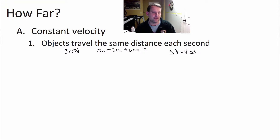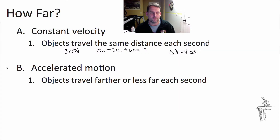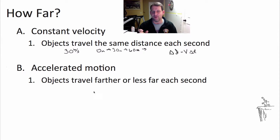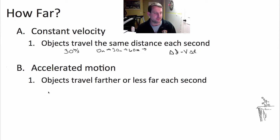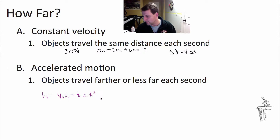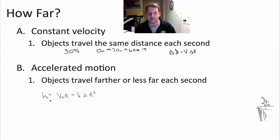Now for accelerated motion, it's a little bit trickier. In accelerated motion, objects are traveling farther or less far each second, so the distance they're changing is different because their speed is different. Our equations for figuring these out are going to be a little more complicated. We found that the equation for this is: height equals initial velocity times time plus one-half times acceleration times time squared. This tells you the distance — the height you are above or below the throwing point or starting point.